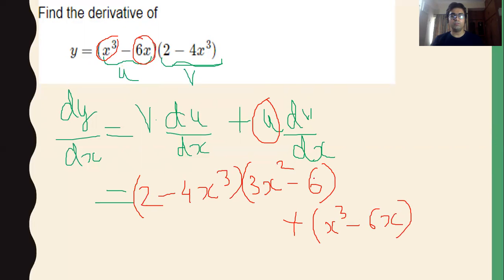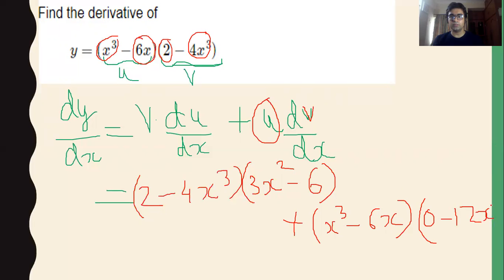Find the derivative of the other function v, which is dv/dx. Inside v there are two functions, so differentiate them separately. The derivative of the constant 2 is 0, minus the derivative of 4x³ by the power rule gives 12x². So dv/dx = 0 − 12x² = −12x².